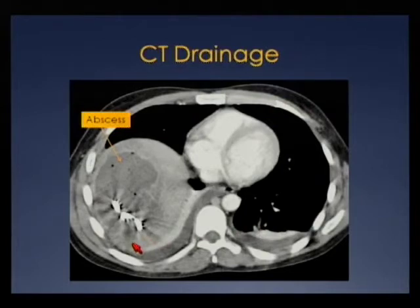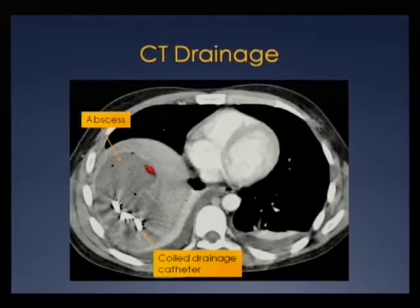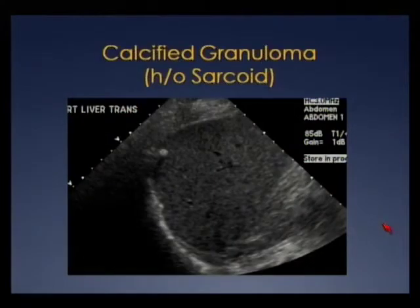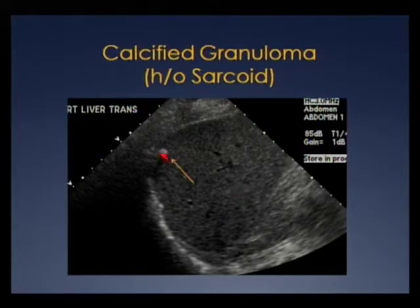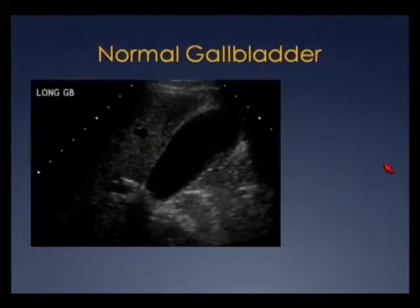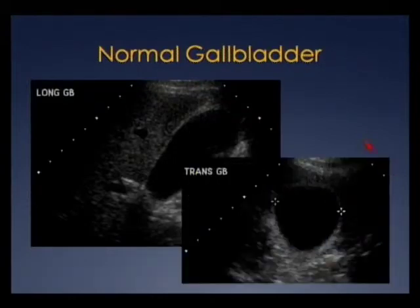This illustrates the multi-modality approach to abscesses — this patient was drained under CT showing a large hypodense collection, foci of air, enhancing capsule, and coil drainage catheter. Here's a cute little granuloma with posterior shadowing in a patient with sarcoid. We frequently see granulomas, but when they're tiny, we usually won't see this focus of shadowing. Moving on to the gallbladder.